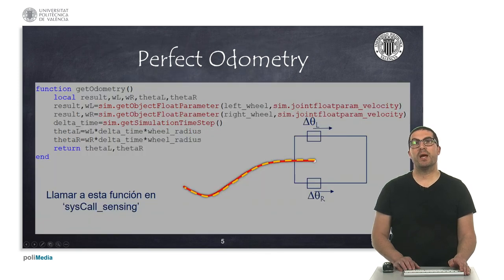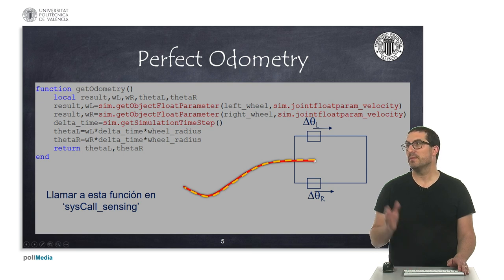Then we can obtain the angular displacement of each wheel with a perfect odometry system from the rotation speed of each of the joints. This is an internal parameter that we must get from a function which is known as get object flow parameter as shown, and the get odometry function actually returns the left and right wheel displacements.